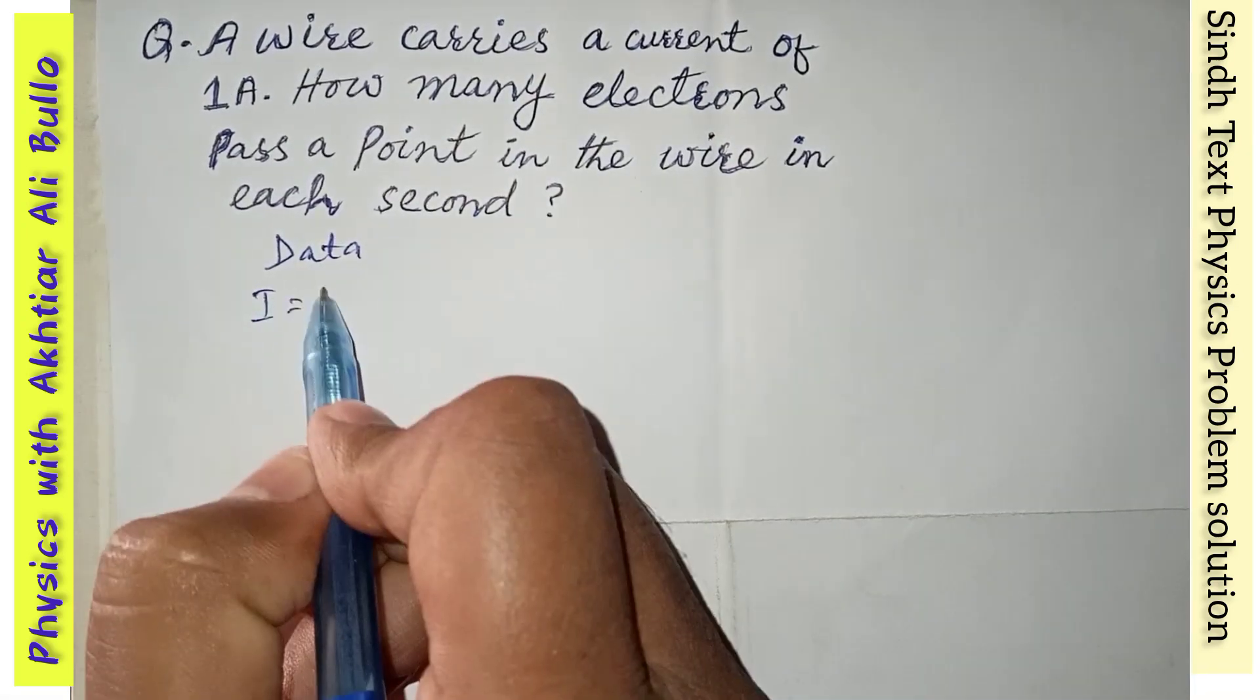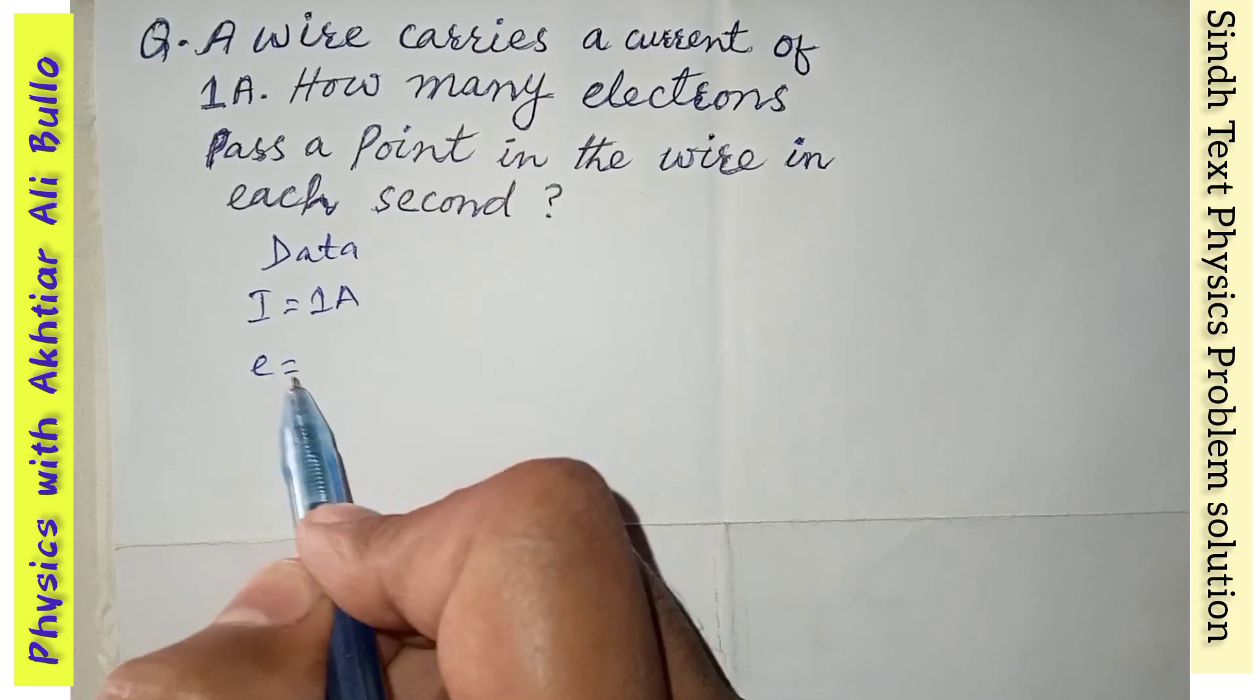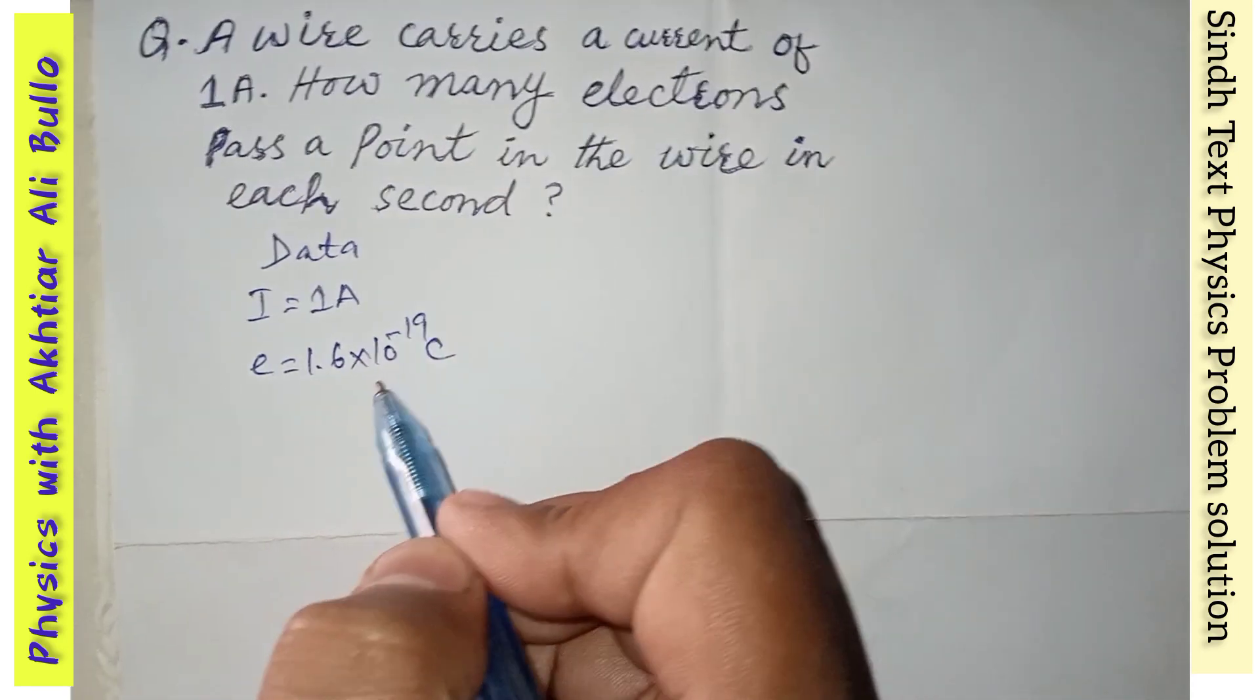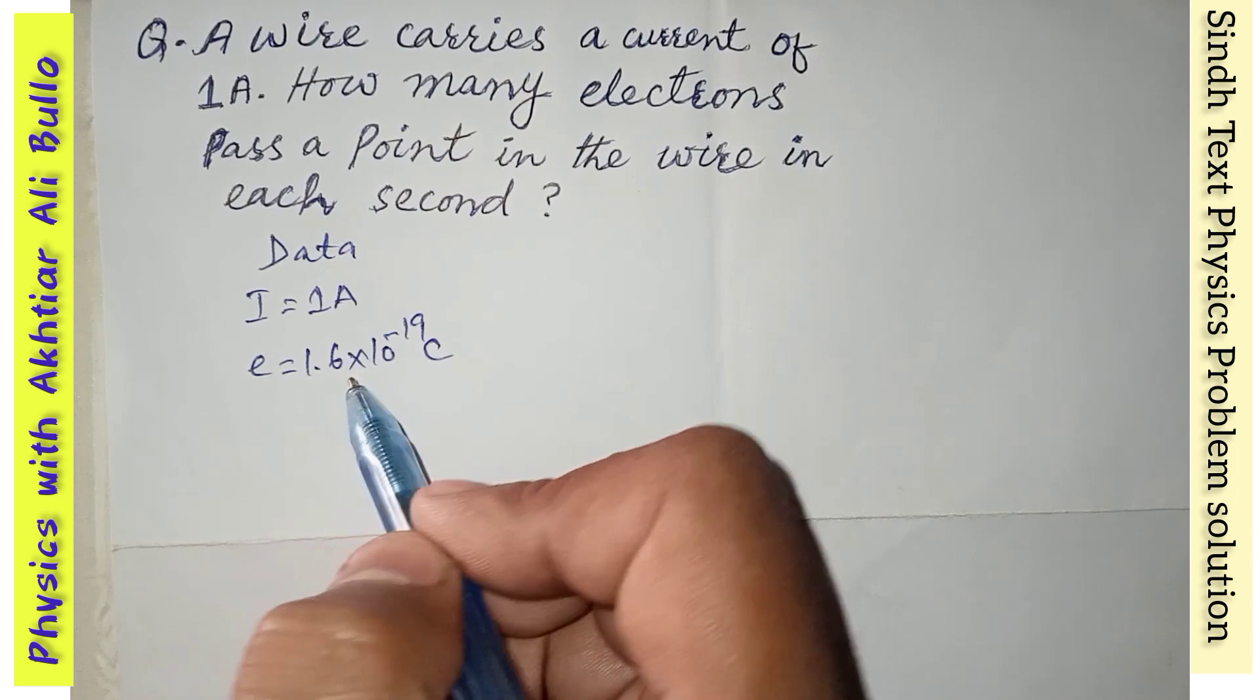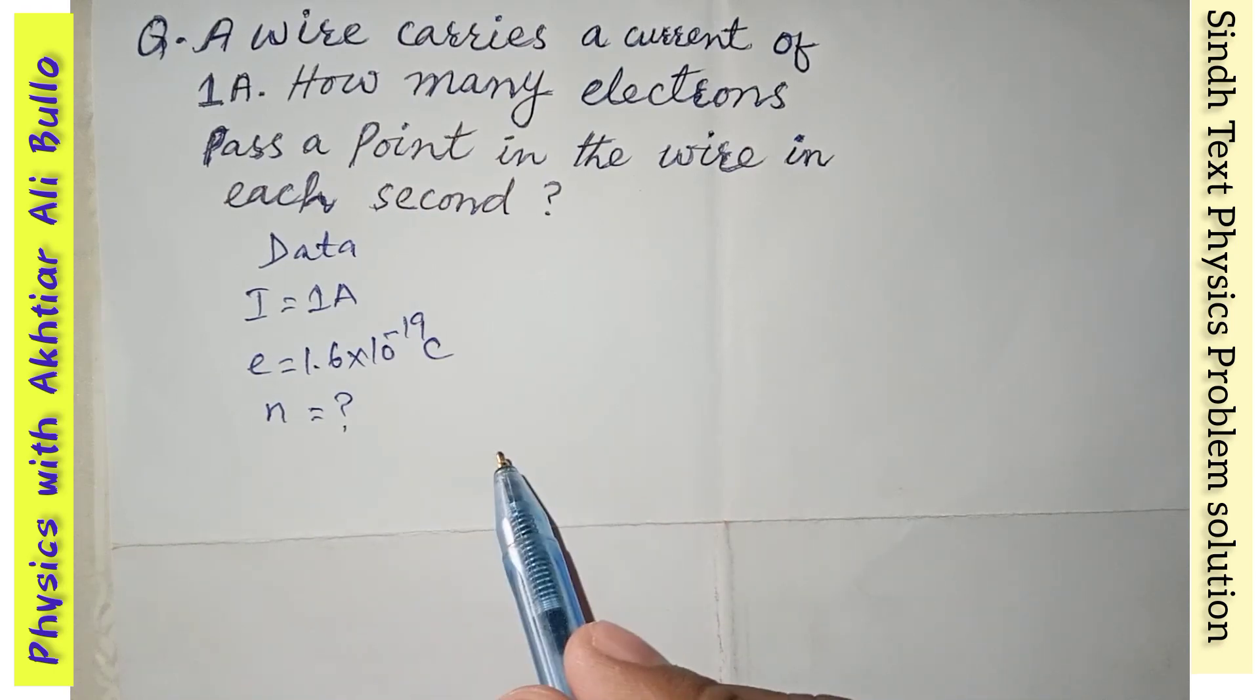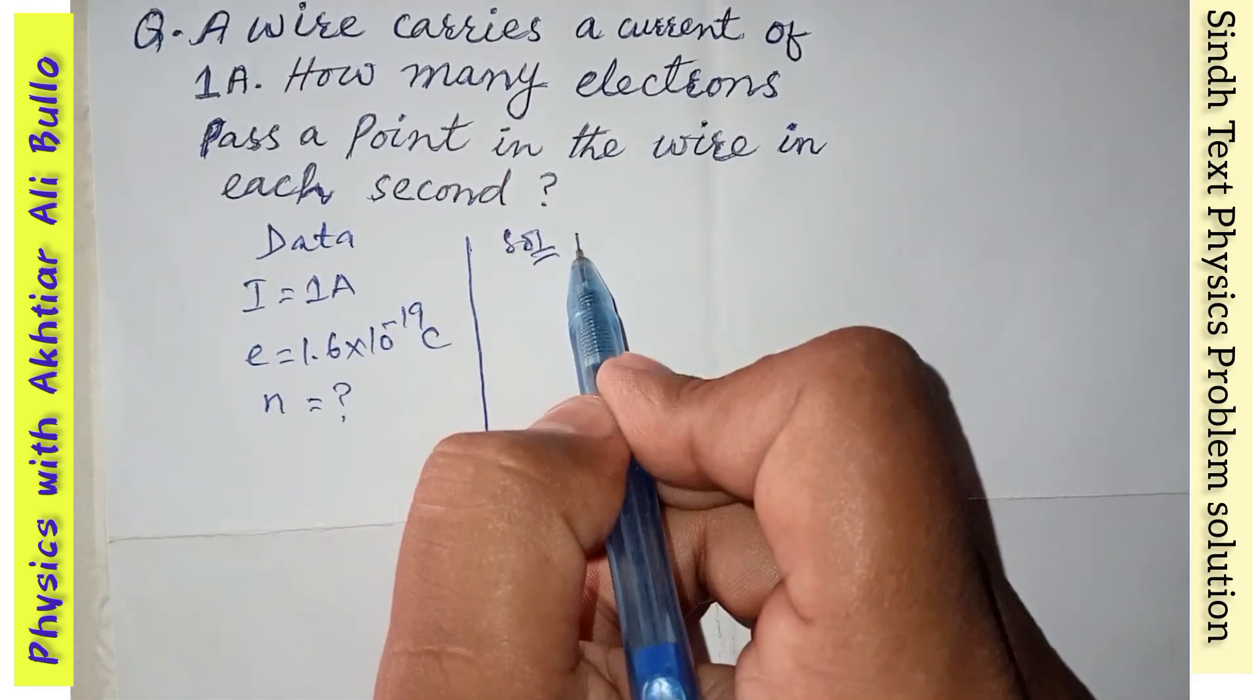The charge of an electron e is 1.6 × 10^-19 coulomb, which is given. This is a constant value. And we have to find the number of electrons n. In the solution, the number of electrons